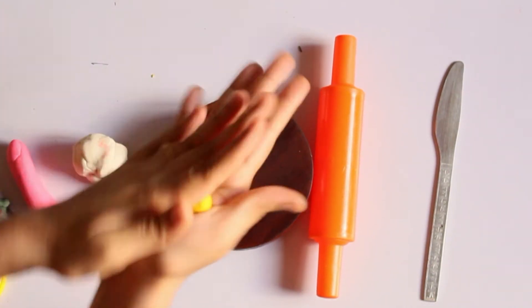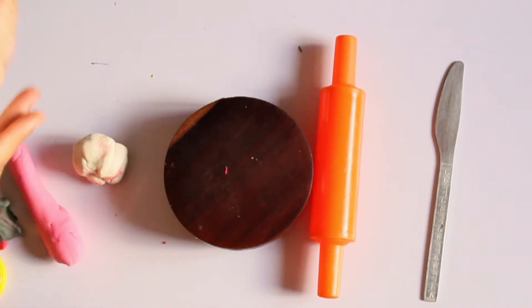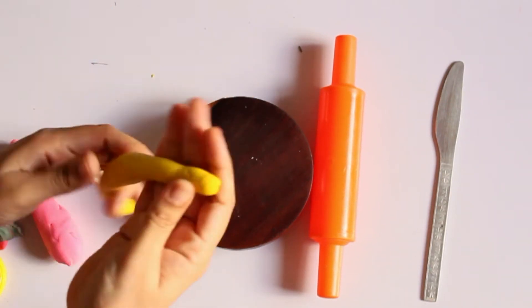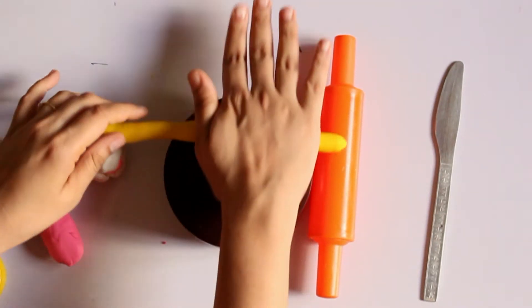...and a small knife. So come on! First let's take the yellow Play-Doh and roll it into a long pipe.